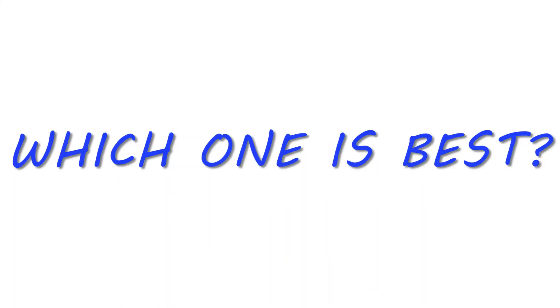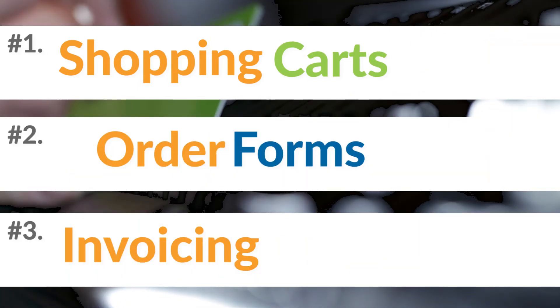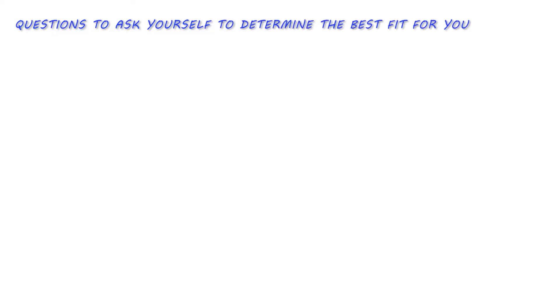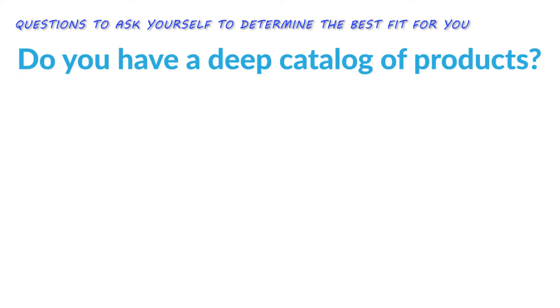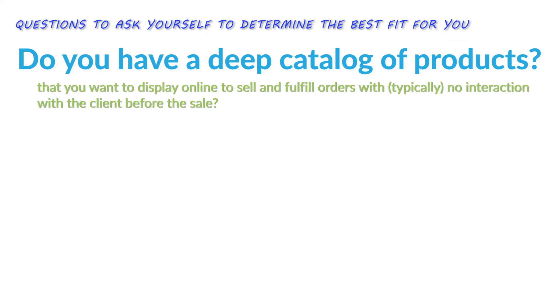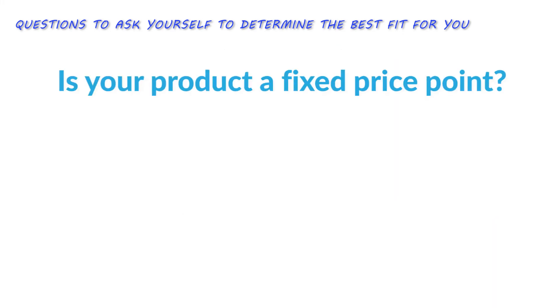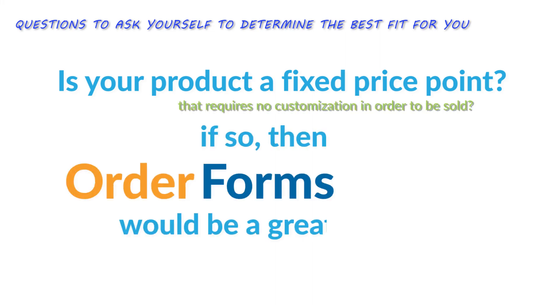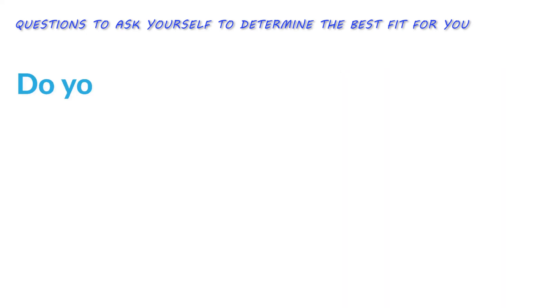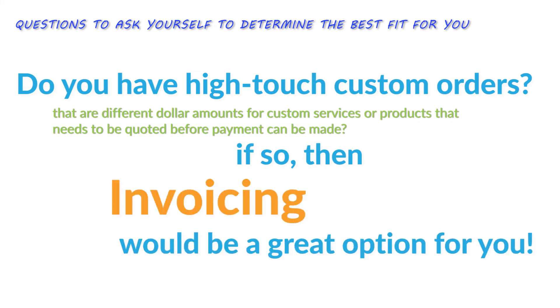The question of which one is best for you depends on the order of actions taken to sell your product or service, how your business operates, and what you sell. If you have a lot of products to display on your website, the e-commerce shopping cart option is best for you. If you have just one or two products to sell and value speed and efficiency in checkout, use an order form builder. And finally, if there is a lot of hands-on, high-touch interaction with customers and customized ordering, an invoicing solution is going to be best for you.